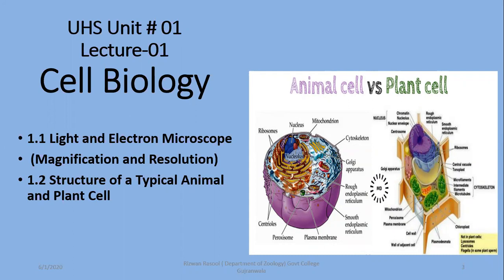We are going to start the first unit without any delay. It is about cell biology. For cell biology, you have to prepare chapter number 4 from your FSC first-year biology textbook. This lecture will cover two main topics: first, light and electron microscopes — specifically magnification and resolution concepts; and second, the structure of a typical animal and plant cell, including their differences and similarities.